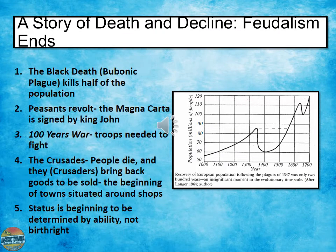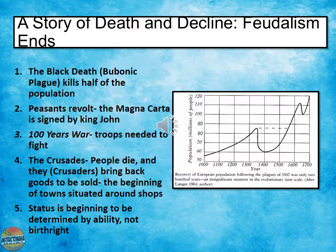The next slide here is a story of death and decline. Feudalism ends. As you know, for the Renaissance to begin, one of the major things that needs to happen is feudalism needs to die. As we learned last quarter, the Black Death, or the bubonic plague, killed half the population in Europe.